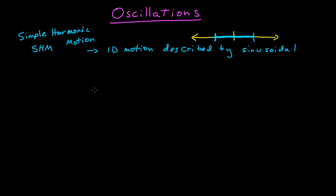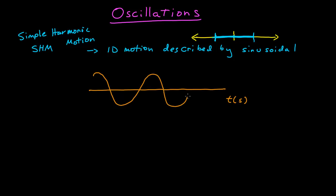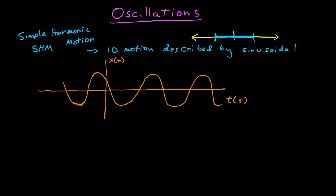Let's graph what that would look like. If I have time in seconds on the horizontal axis, the vertical axis is x of t — position as a function of time. It's an oscillatory function in time with some t equals zero axis. The units of position are meters or centimeters, and time has units of seconds.